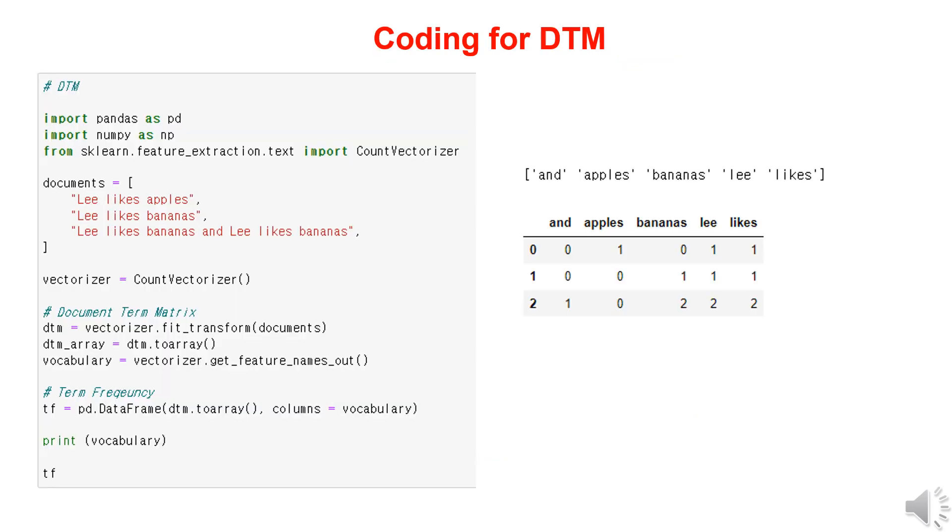Now, let's try implementing the document term matrix in code. You can find this Jupyter notebook file on GitHub, so feel free to download it and run it directly. First, we'll import the pandas and numpy libraries. Additionally, we'll import the count vectorizer library to numerically represent the text data based on word frequency.